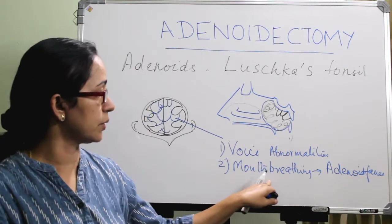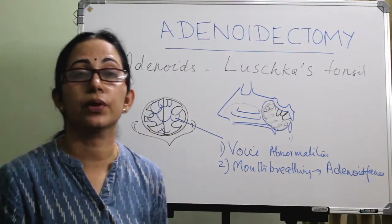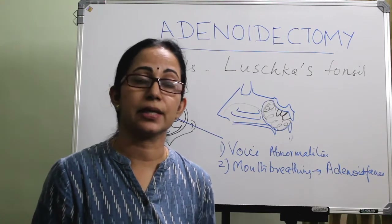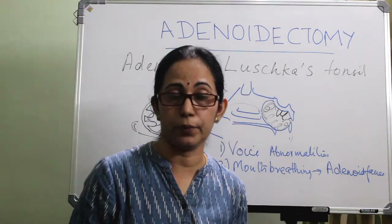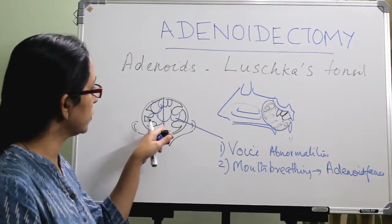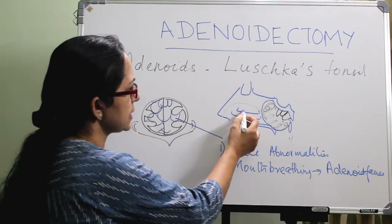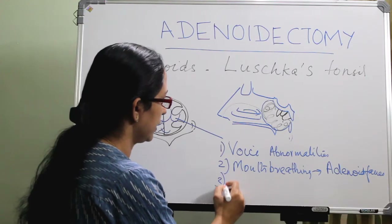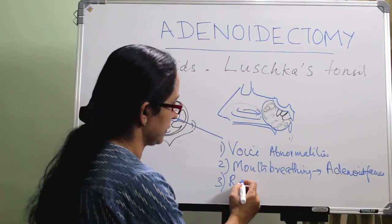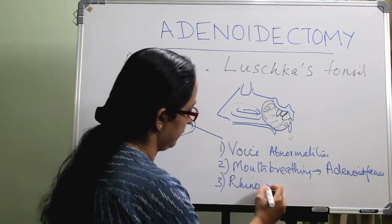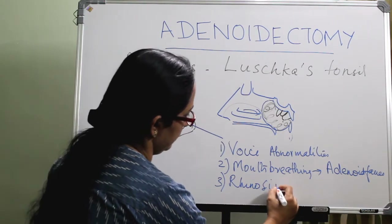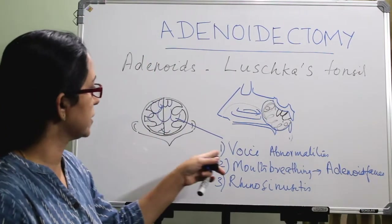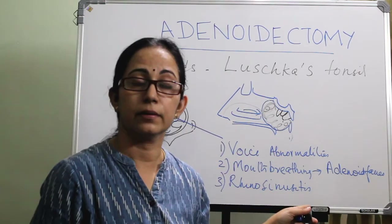If adenoid facies or mouth breathing persists for a long time, it can lead to cardiovascular complications like cor pulmonale and pulmonary hypertension. Also, sinus drainage does not happen properly, so there will be recurrent rhinosinusitis.